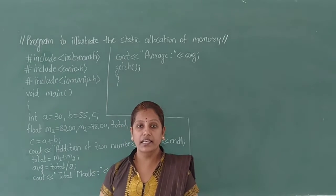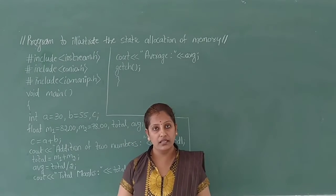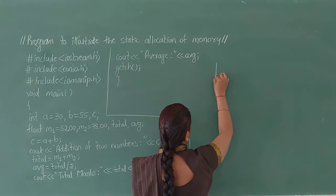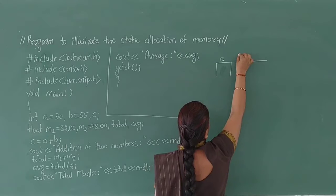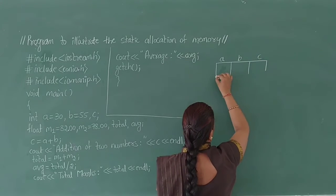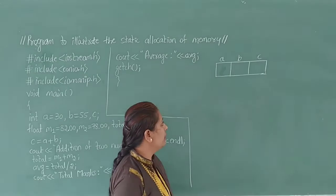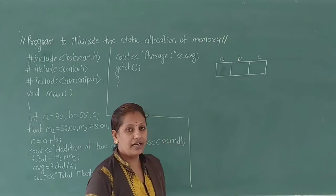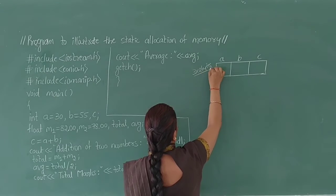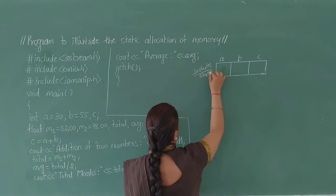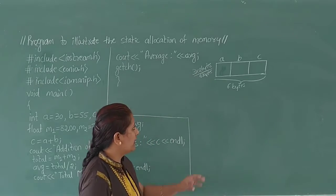The integer variable reserves two bytes of memory for a declared variable. Here three variables are declared with the data type int. Therefore, it creates static memory allocation for variable A, variable B, and variable C. It reserves two bytes of memory space for each variable. Three variables declared means three into two bytes of memory — total it reserves six bytes of memory space for the declared variables.